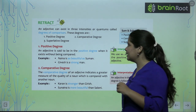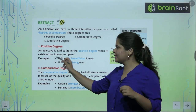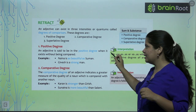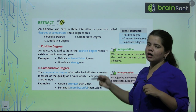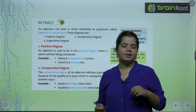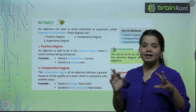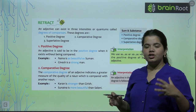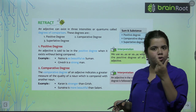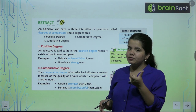What is positive degree? An adjective is said to be in positive degree when it exists without being compared — when we don't compare anything to anything. Like 'she is a good girl' — 'good' here is in positive degree.